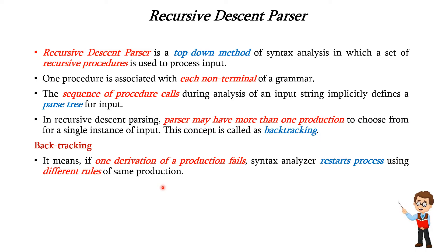We know that for one production we can have multiple rules. This technique may process the input string more than once to determine the right production which matches the given input string.